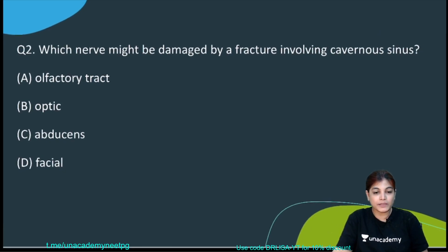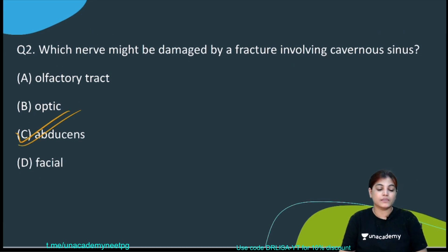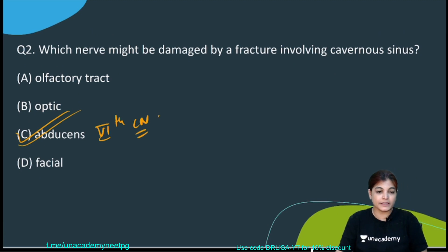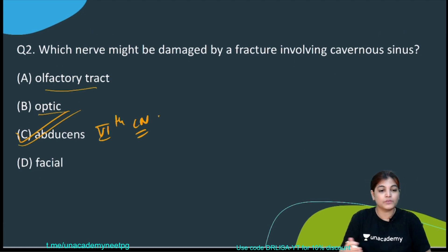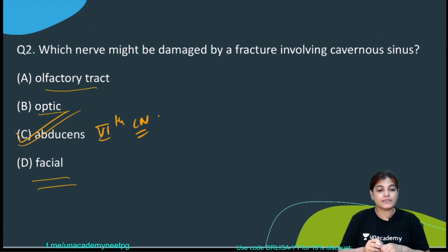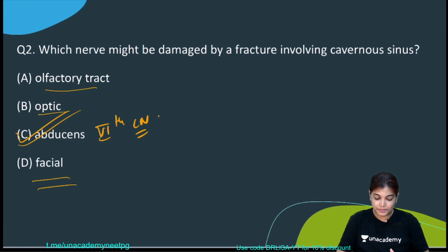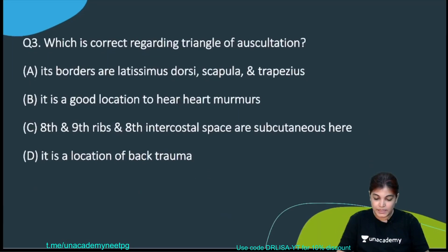The correct answer for the MCQ is the abducent nerve — 6th cranial nerve. Olfactory nerve is closely related to the cribriform plate; optic nerve is the 2nd cranial nerve related to the apex of orbit; and the facial nerve (7th) along with the labyrinthine vessels is related to the internal acoustic meatus. None of these are closely associated with the cavernous sinus, so the correct option is the abducent nerve.